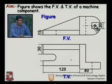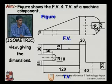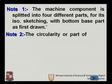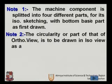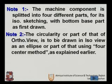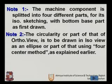All the required dimensions are given and we need to find out the isometric view of this figure, a machine component. We have split the views into four different parts. For the isometric view, circular parts from the orthographic view are to be drawn as ellipses in the isometric view. We use the four-center method to draw these ellipses to represent the circular parts.